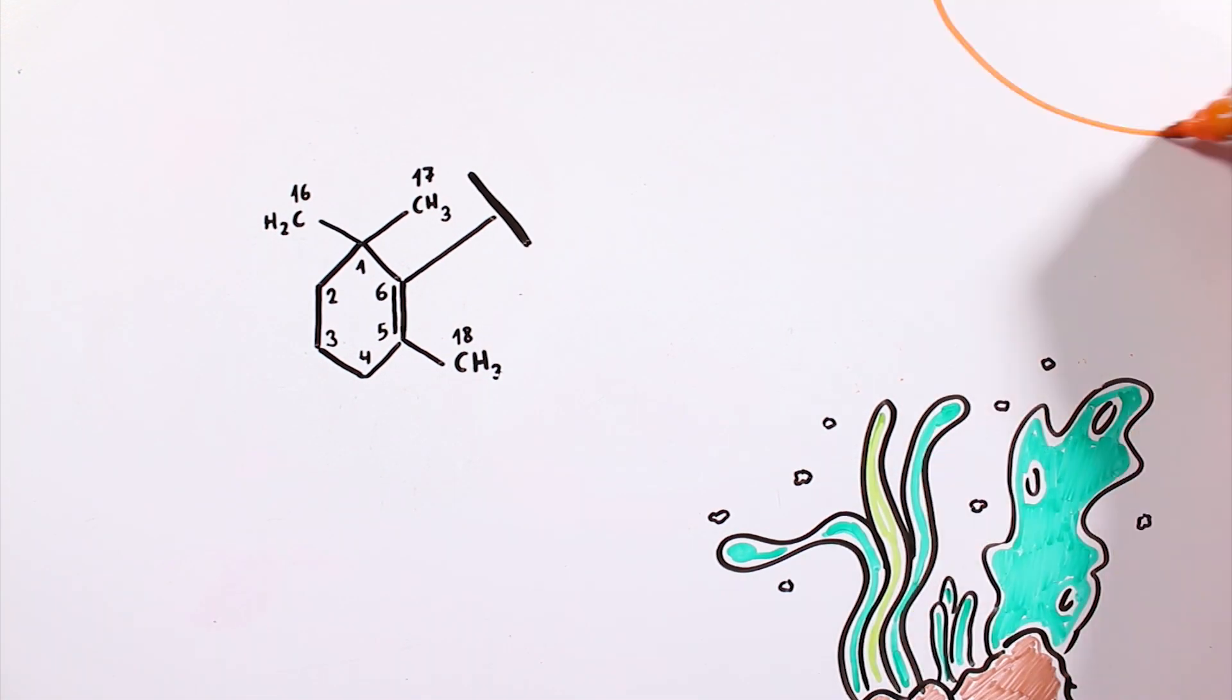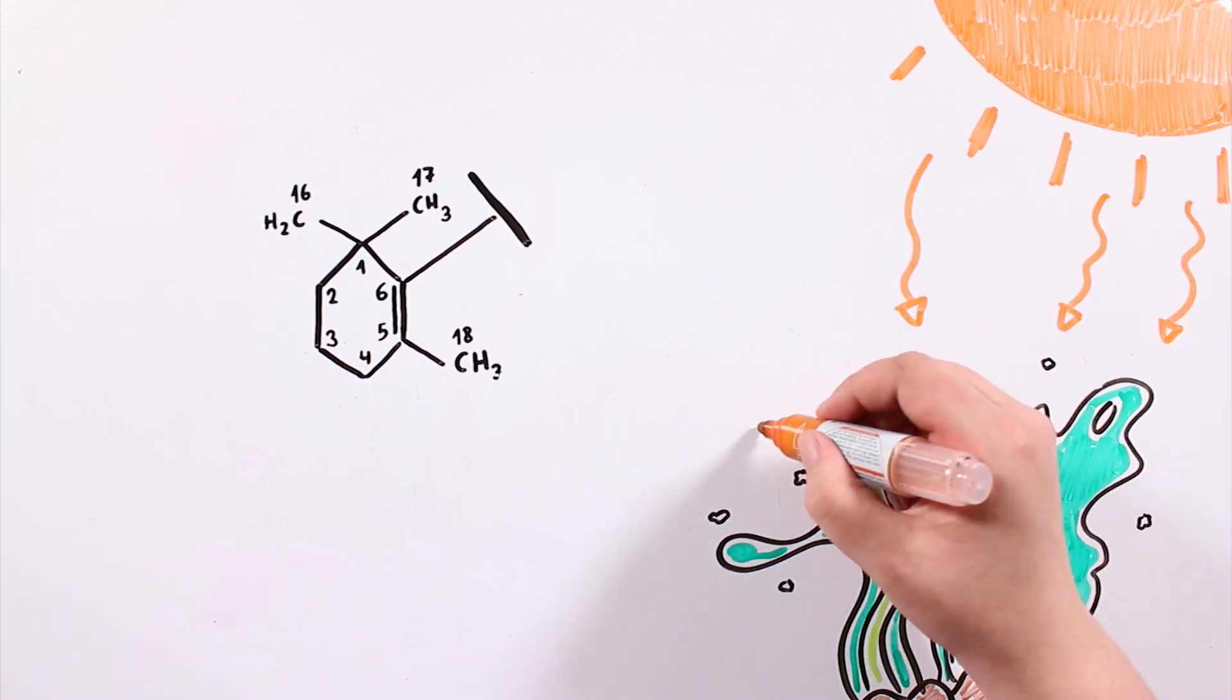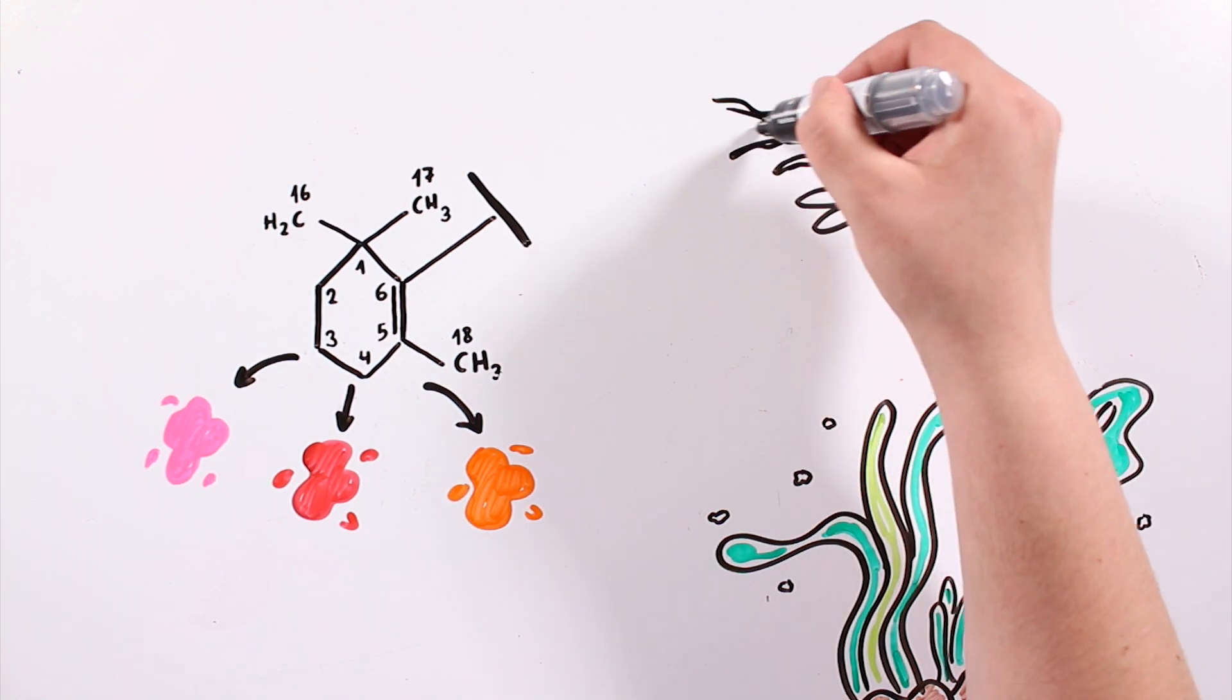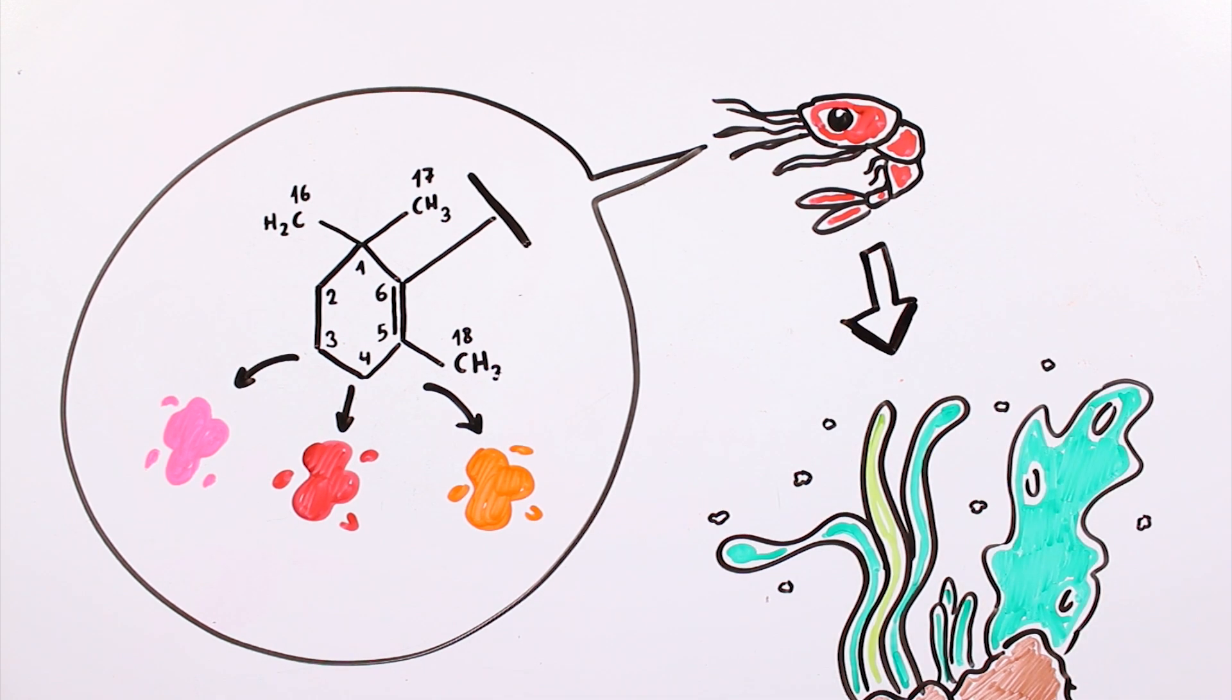Carotenoids are chemical substances only produced by organisms that perform photosynthesis, such as seaweed or bacteria. They are pink, red and orange due to their chemical structure. Those crustaceans flamingos eat have this pigment because they have ingested this bacteria or seaweed that synthesize it.